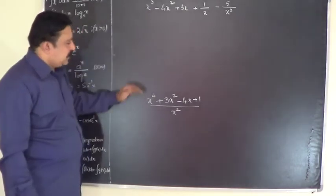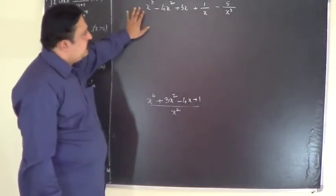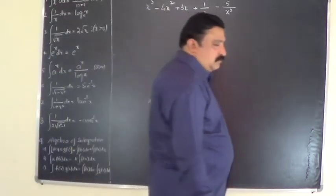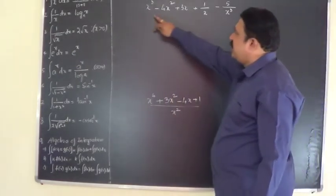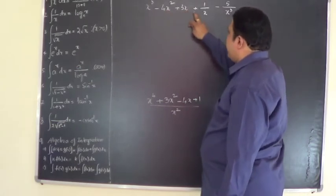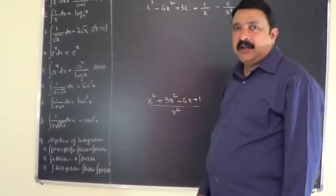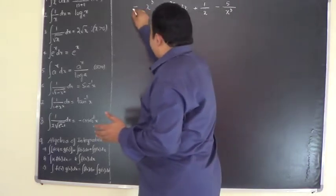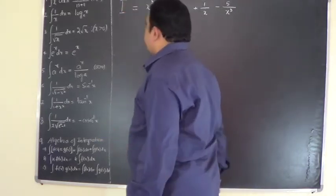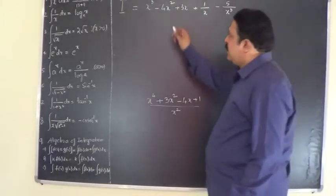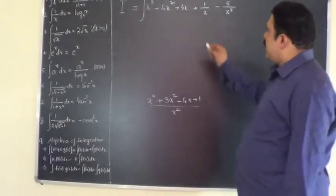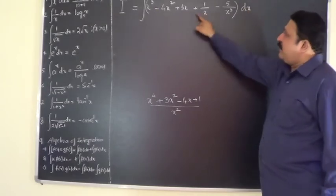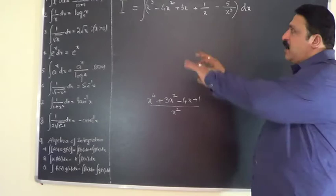In this video we will see how to proceed with integration. The given problem looks something like this. Look at the first problem: integrate the function x cubed minus 4x squared plus 3x plus 1 by x minus 5 by x. Before starting with integration, you should write it in such a way that it is ready for integration. The left hand side you have to put it as i, which indicates the given integral, and any integral must carry the sign of integration. Once you put the sign of integration it should end with dx, which means the given function is integrated with respect to x.